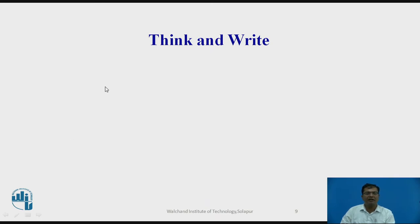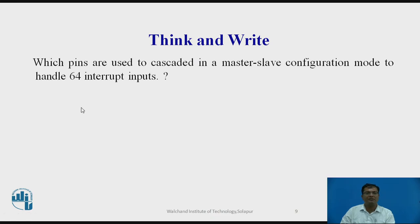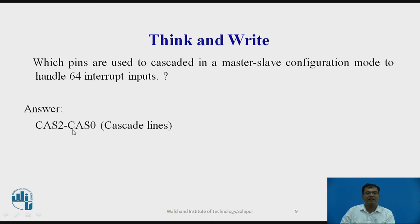Consider this question: which pins are used to cascade in a master-slave configuration to handle 64 interrupts? The answer is CAS0, CAS1, and CAS2. These 3 pins give 2 raised to 3, which equals 8 different interrupt request lines. Each supports one 8259, and 8 times 8 equals 64 different interrupts that can be handled.